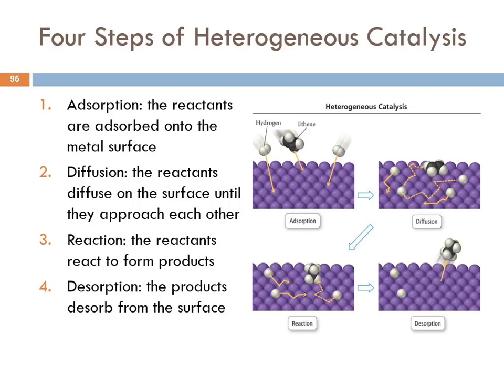When they partially hydrogenate vegetable oil, they use a catalyst much like this to do that—and that's how you end up with trans fatty acids. It's more of a subject for biochemistry, but it's because of the catalyst that you can end up with the trans fatty acids.